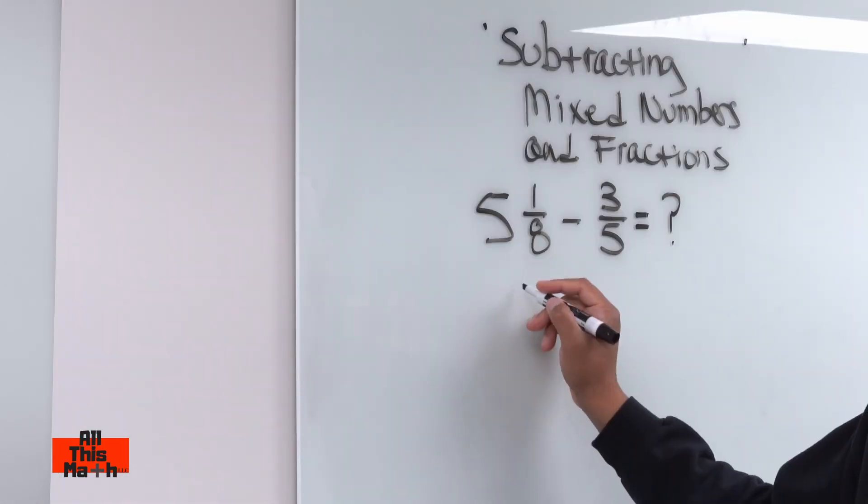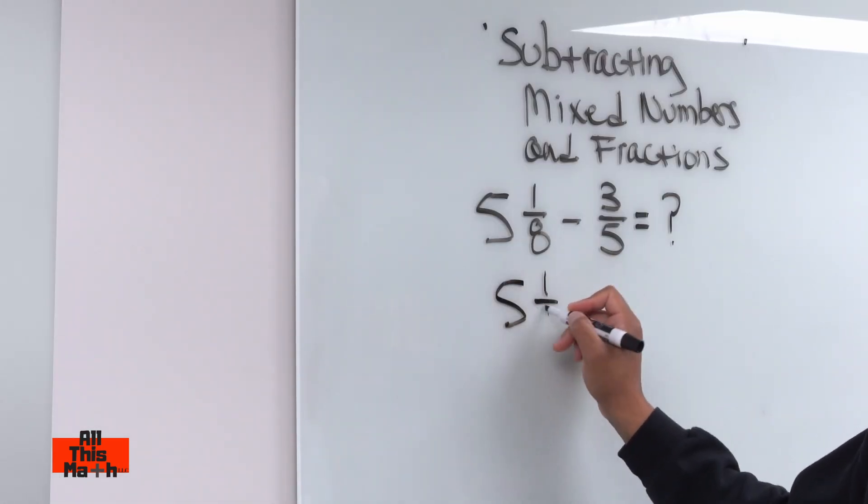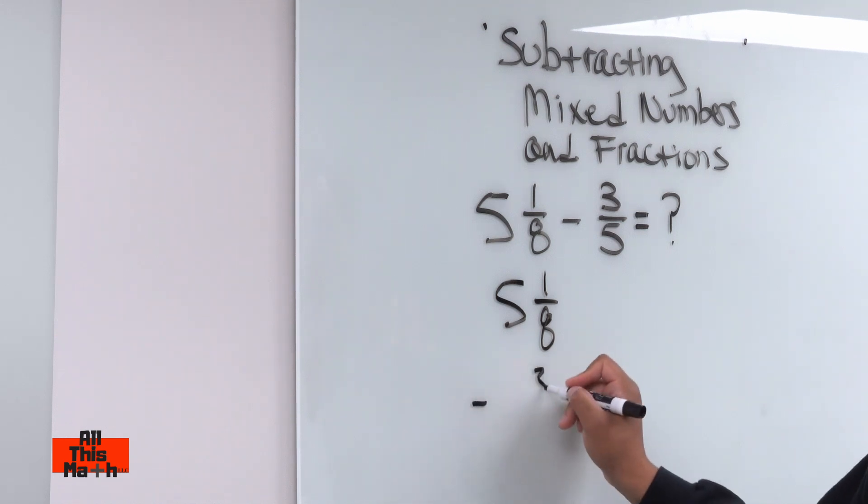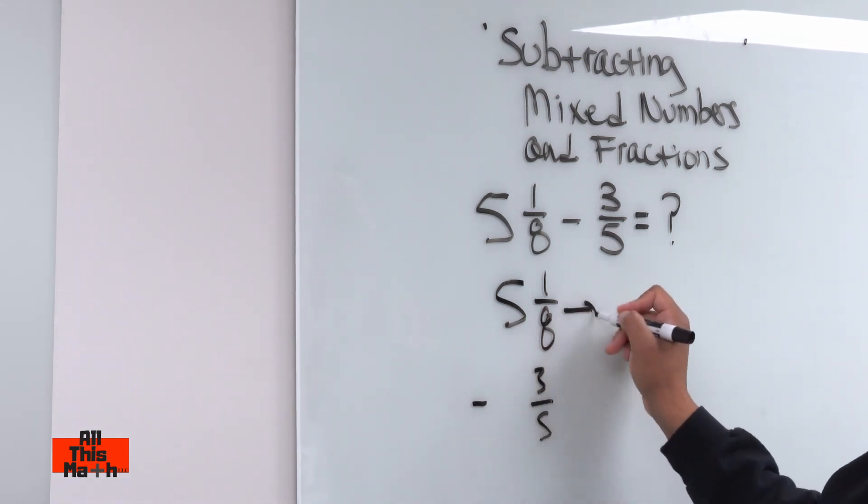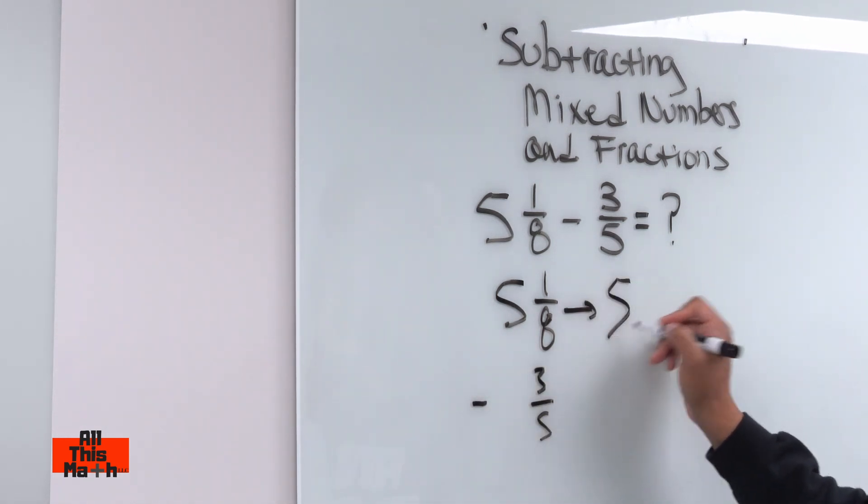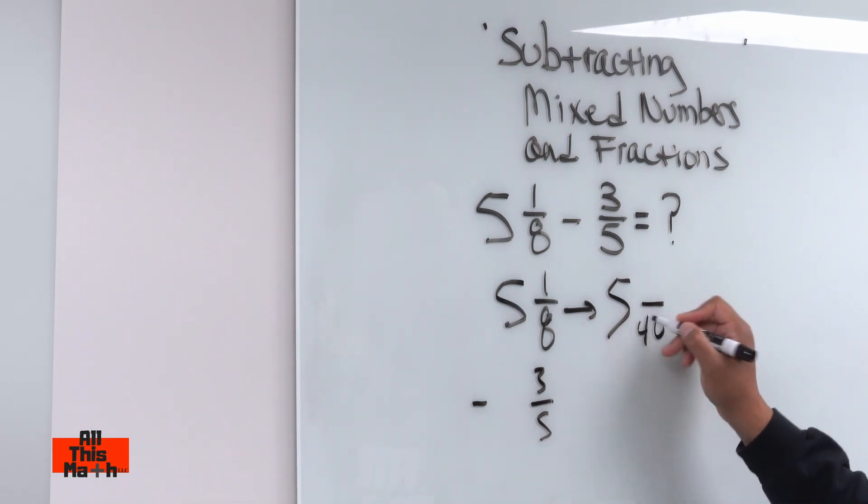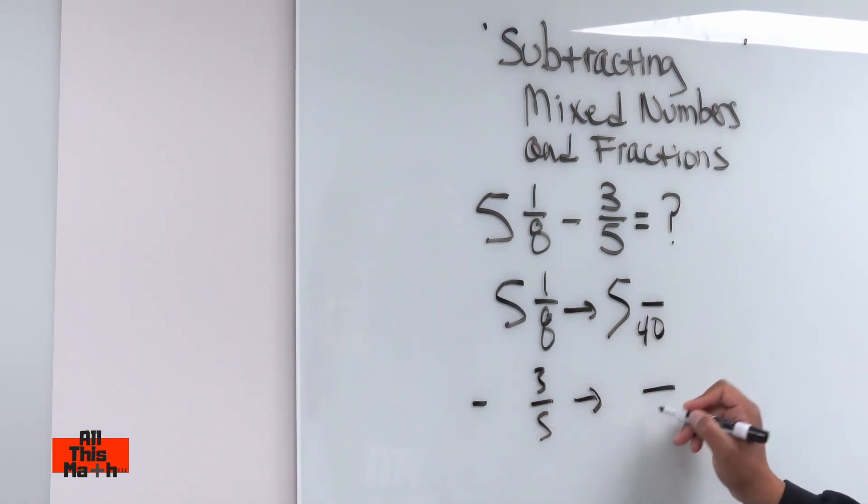So, let me rewrite this. So, we got five and one eighth. Let's write it vertically, like this. And then, this is going to change into five, and then I'm going to have a denominator of 40, and this is going to turn into a denominator of 40.